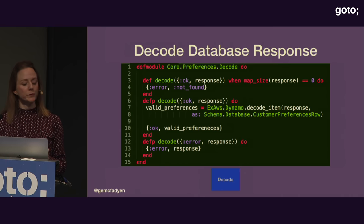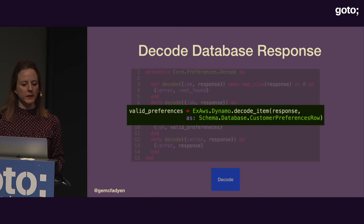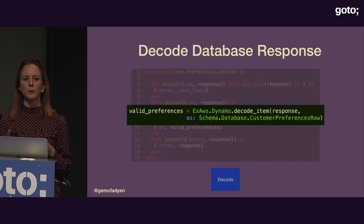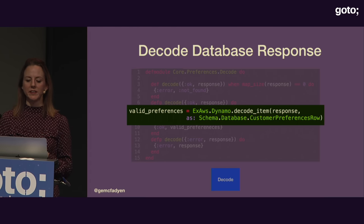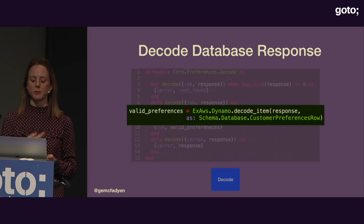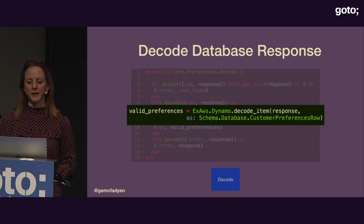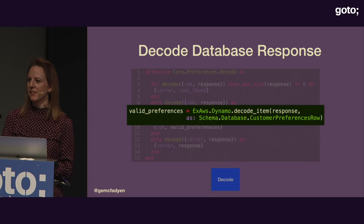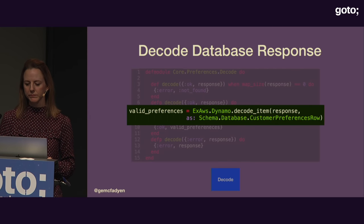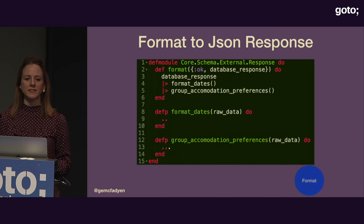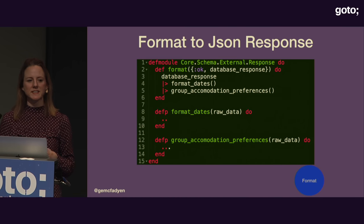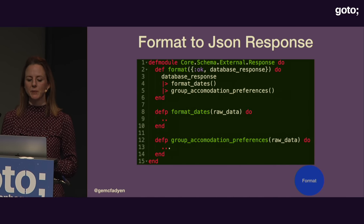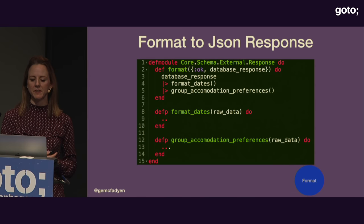It's debatable whether this actually needs its own module, or whether it could be merged with the previous one, since there's not really any business logic in it. But the point is: don't be afraid to break down your systems, and if you find you need to put bits back together, that's fine. The last step is transforming to JSON. It makes sense to have this separate because it's doing a completely different job — it's not interacting with the database at all. We can change the JSON response without affecting any of the database queries.